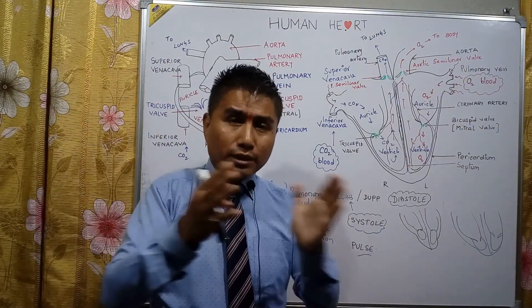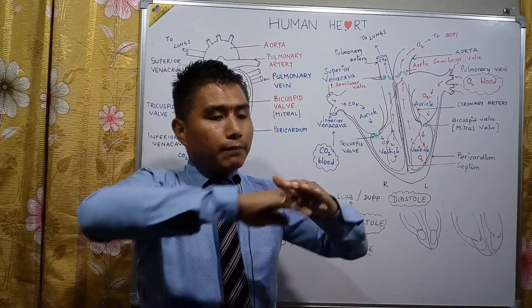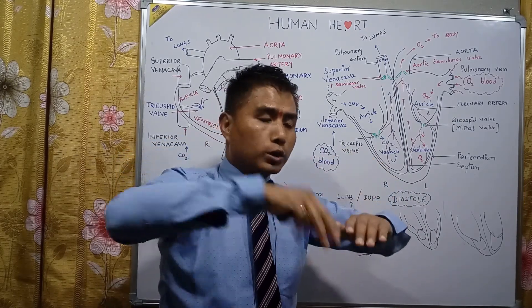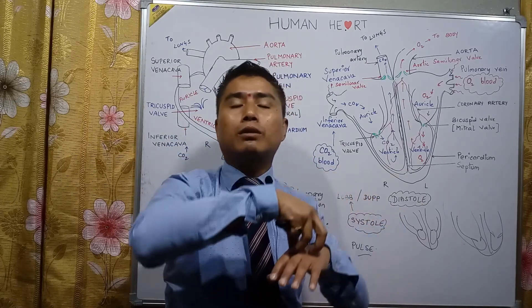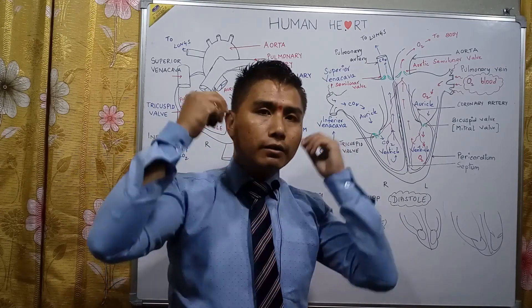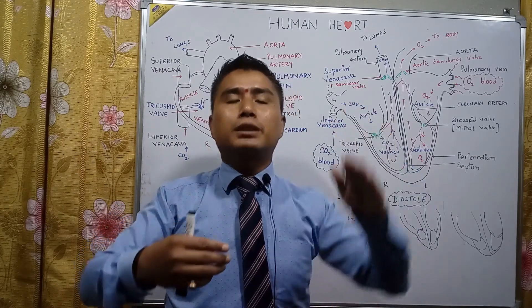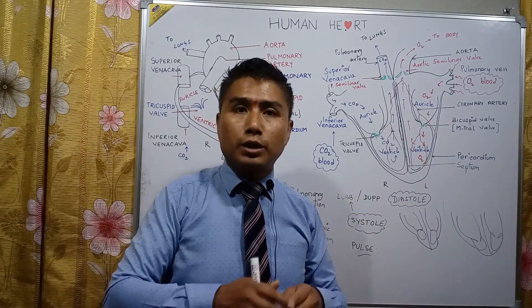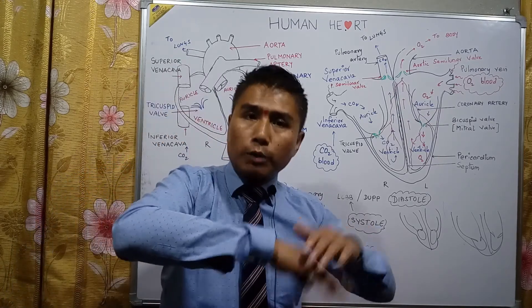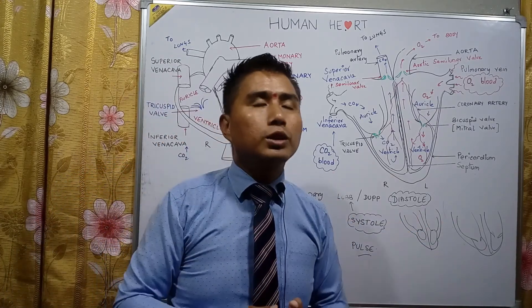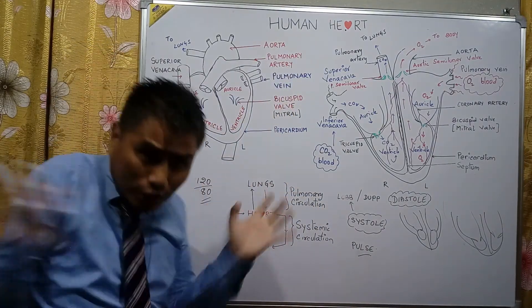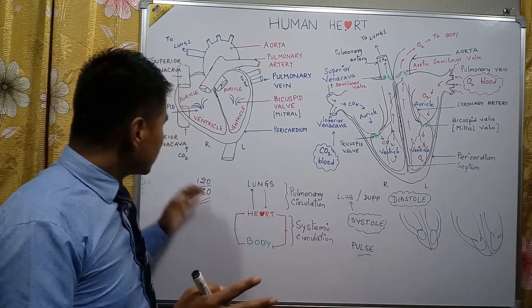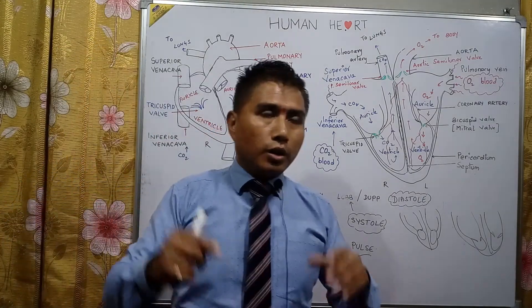When the heart pumps blood, blood flows through blood vessels under great pressure, hitting the vessel walls with force. This force is measured with an instrument called a sphygmomanometer and a stethoscope in units of mercury. Normally in a fully grown adult, the pressure is 120/80 — where 120 is the systolic pressure and 80 is the diastolic pressure.